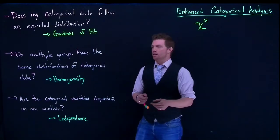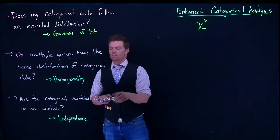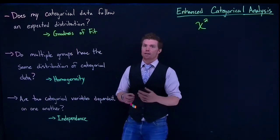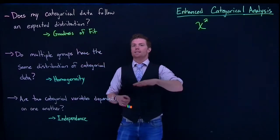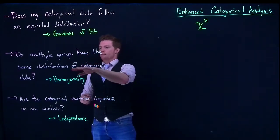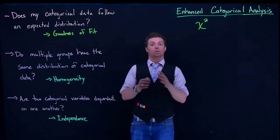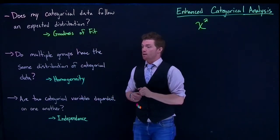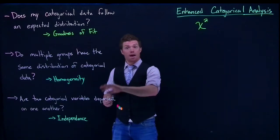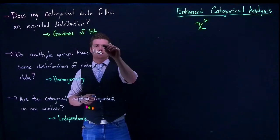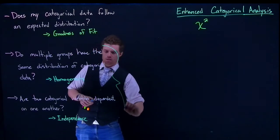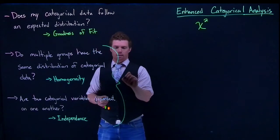What separates them is how the data was collected. Are we looking at two variables and seeing if they are dependent from one another? Or are we specifically looking at different groups and seeing if the distribution of the categorical data between those groups is the same or not? The mathematics between them—mathematically the same.